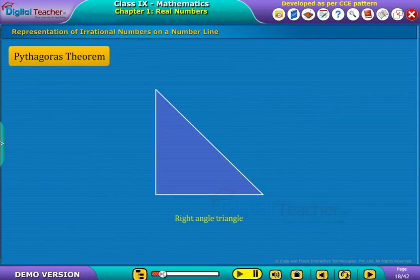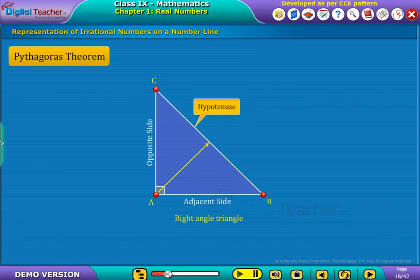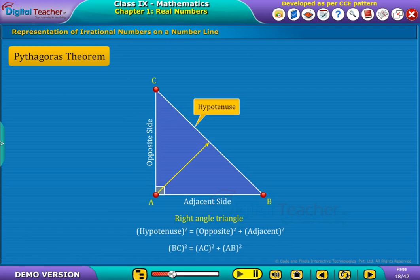The Pythagoras Theorem states that in a right-angle triangle ABC, the line opposite to the right-angle is hypotenuse. And it says that hypotenuse square is equal to the sum of the squares of other two sides, that is, as shown on screen.